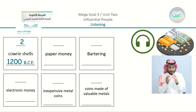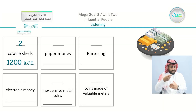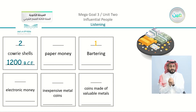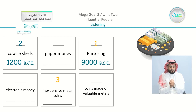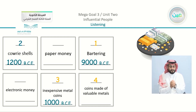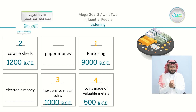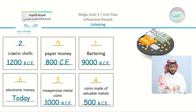Okay, are you ready? Yes, we have our answers. We're going to answer the task. So I'm going to do it and you're going to check your answers with me. We have number one: bartering — when did it appear? It appeared 9,000 BCE. Then number two is already given: cowrie shells at 1200 BCE. Number three: inexpensive metal coins that appeared in 1000 BCE. Number four: coins made of valuable metals, which appeared in 500 BCE. And it is very clear that we have our fifth option, paper money, which appeared 800 CE, leading to the last one: electronic money, which is used today.